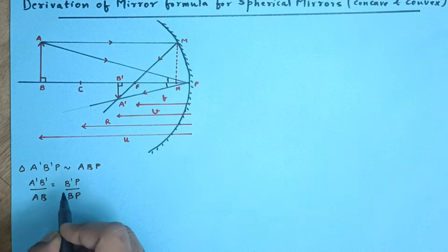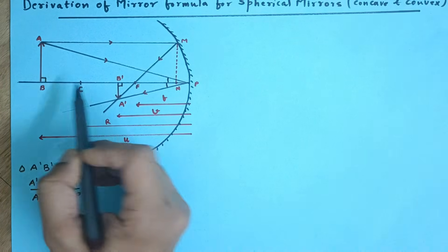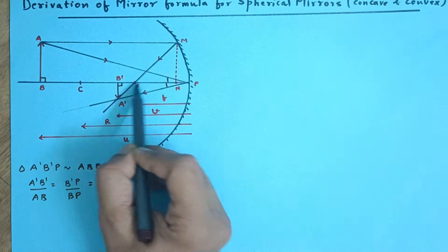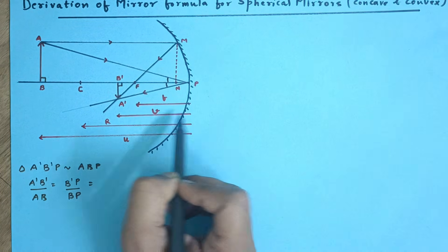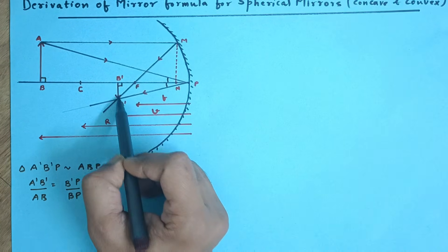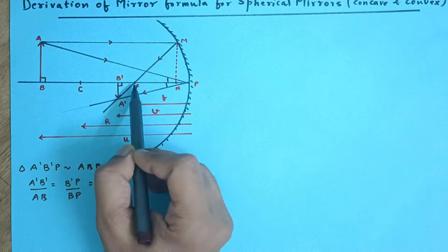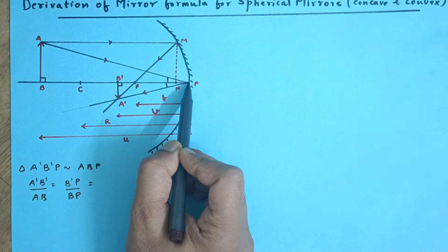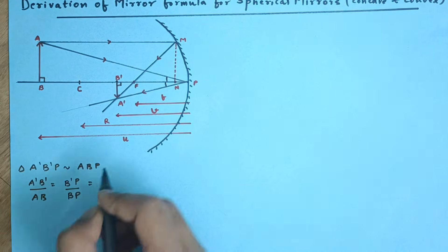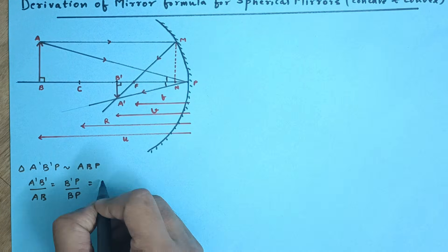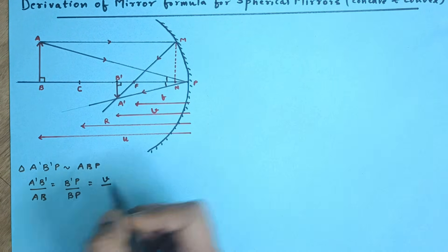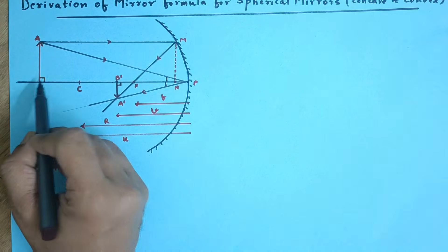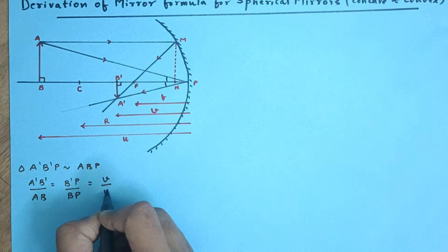Let me substitute the values. B'P is this distance, which is equal to the image distance V, because the image is formed between F and C — so B' is the base of the real image and PB' is the image distance V. Divided by BP, which is the object distance U — from P to B is the object distance U.